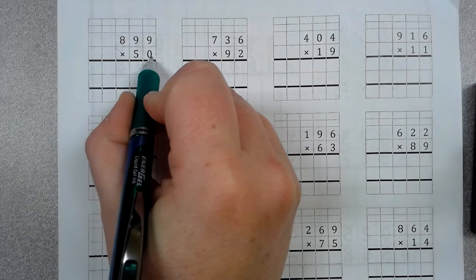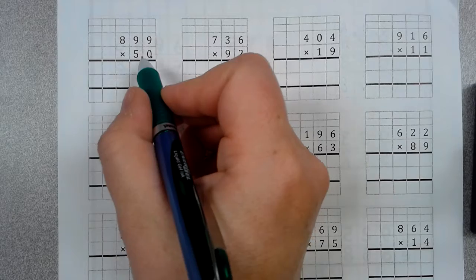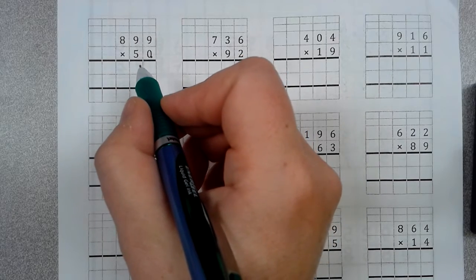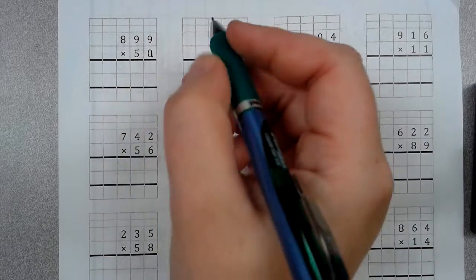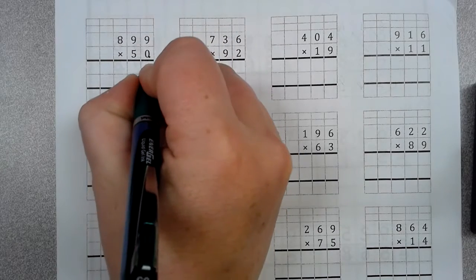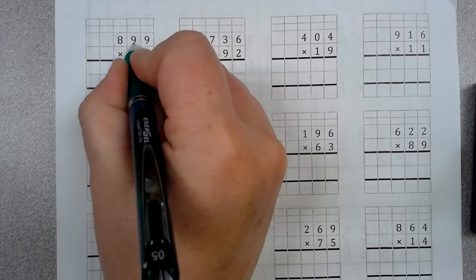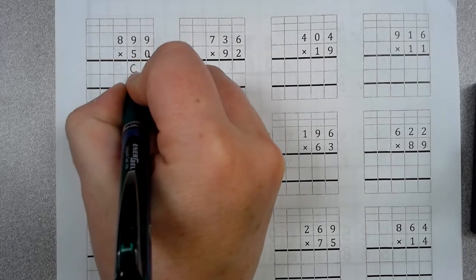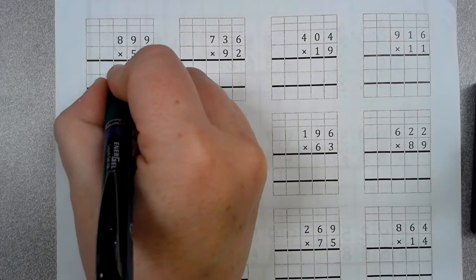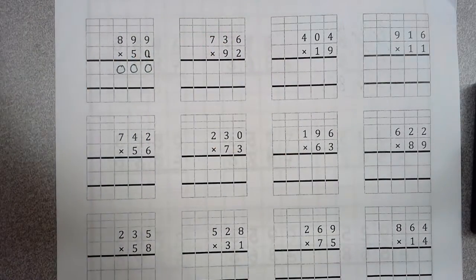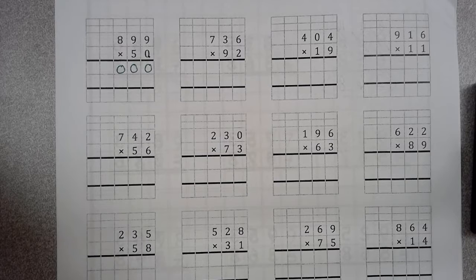So, 899 times 50. I'm going to start with my 1s, and it's 0s. So, remember, any number times 0 is... That's right. It's 0. So, 0 times 9 is 0. 0 times 9 is 0. 0 times 8 is 0. So, you got finished with that.